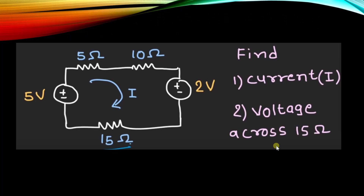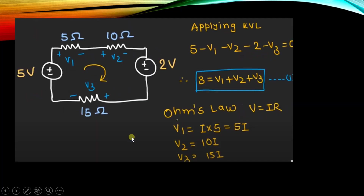Now we will explain Kirchhoff's Voltage Law with an example. In this circuit, we want to find the current I and the voltage across the 15-ohm resistance. Applying KVL across the closed loop: 5 minus V1 (voltage drop across 5 ohms) minus V2 (voltage drop across 10 ohms) minus 2 volts minus V3 (voltage drop across 15 ohms) equals zero. This simplifies to 3 equals V1 plus V2 plus V3, which is equation 1.